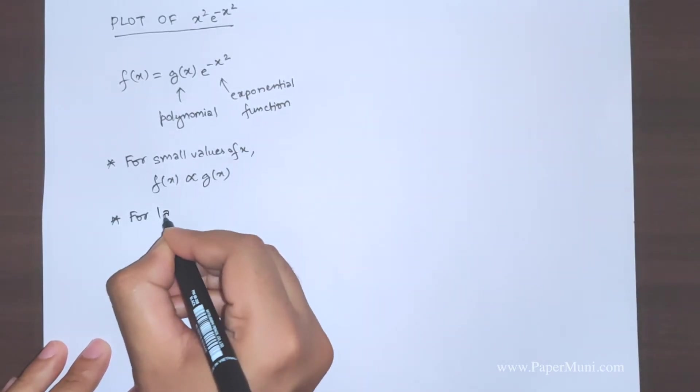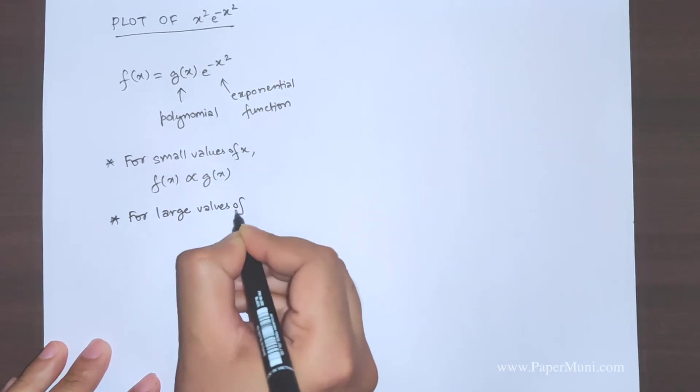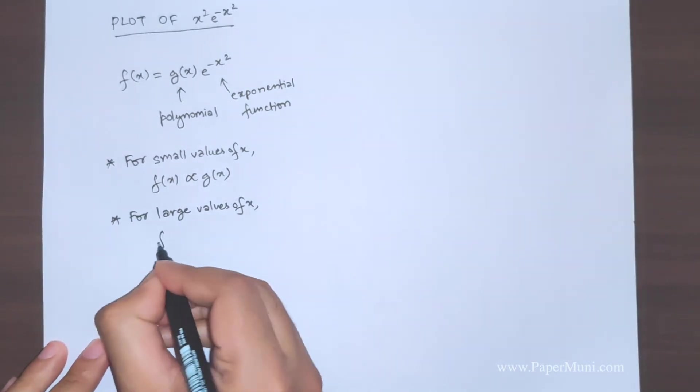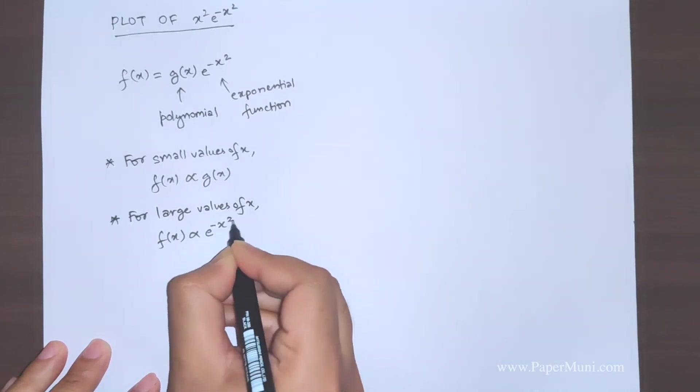For large values of x, f(x) is proportional to exponential to the power minus x square.